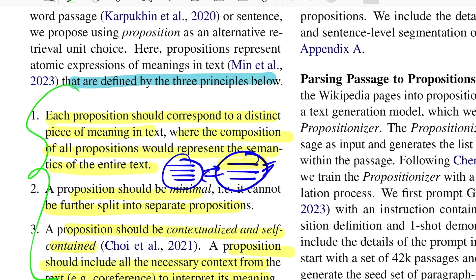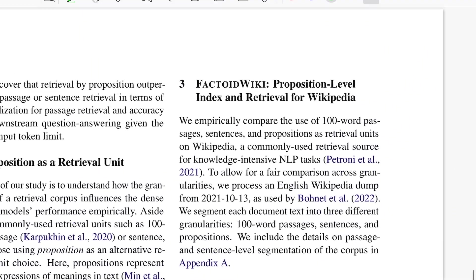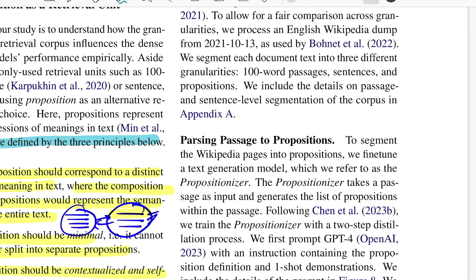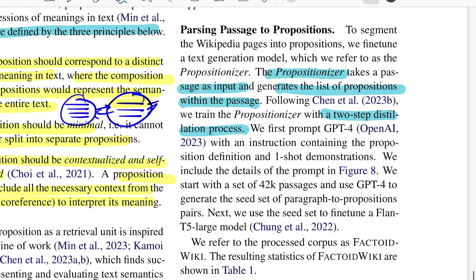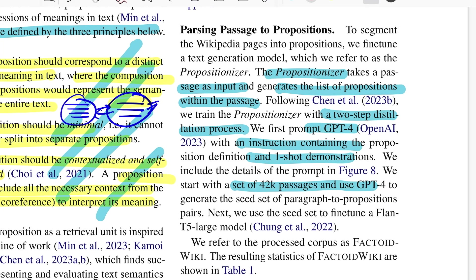The question is: how are we even creating these propositions given a passage as input? For that they train a model in two steps. They call their system the Propositionizer, which takes a passage as input and generates a list of propositions as output. First, they prompt GPT-4 with an instruction containing the proposition definition and a few short examples of a passage alongside its extracted propositions. They create a dataset using this process for roughly 42,000 passages, getting a seed dataset of paragraph-to-proposition pairs. Then they fine-tune a much smaller language model — Flan-T5-Large — on this dataset.